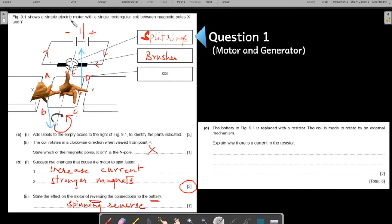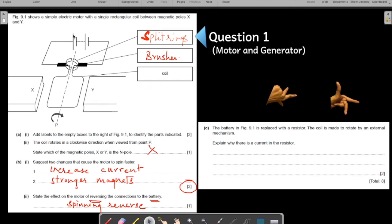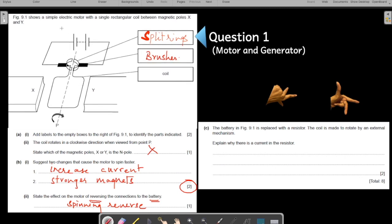Let us come to the last part of the question which says the battery in this figure, the battery in this picture is replaced by a resistor. Now let us remove all the extra information that we have here. The battery is replaced by a resistor. So what are they doing? You now have a resistor here. Let us draw a box which is your resistor. This is your resistor. The coil is made to rotate by an external mechanism. So maybe you are holding this coil from somewhere here and you are rotating it. You are turning it with your hand or with the help of wind or water. Any different kind of forces from around you can be used to rotate the coil.